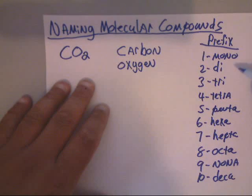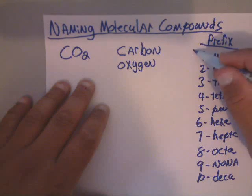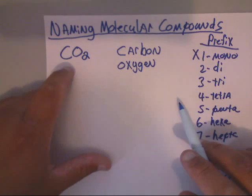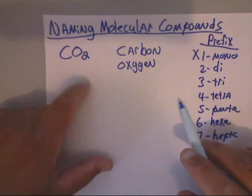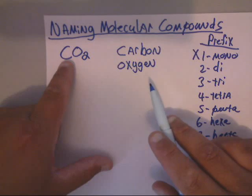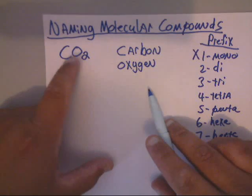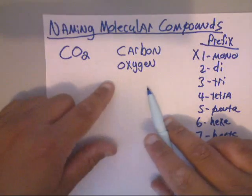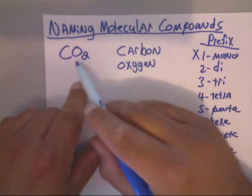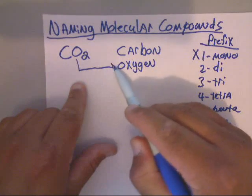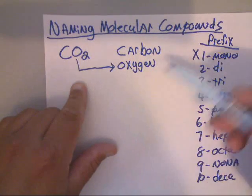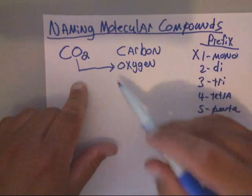Just remember that the prefix mono is not used on the very first element named — it's never used for the first element. So if you just have one carbon like we have here, you would just use the word carbon.